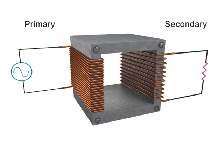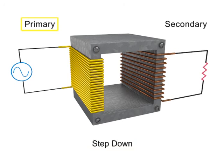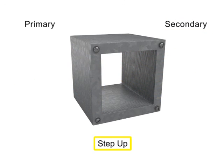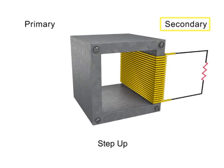Transformers can either step up or step down a voltage. In a step down transformer, the number of turns in the primary coil is greater than the number of turns in the secondary coil. In a step up transformer, the number of turns in the secondary coil is greater than the number of turns in the primary coil.